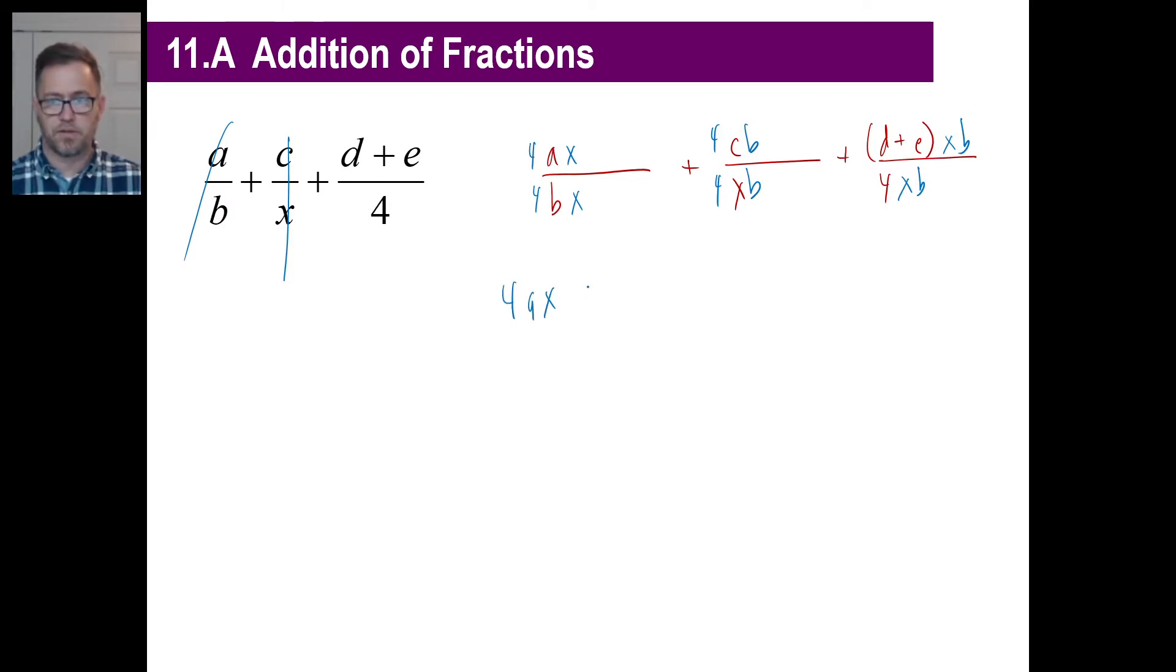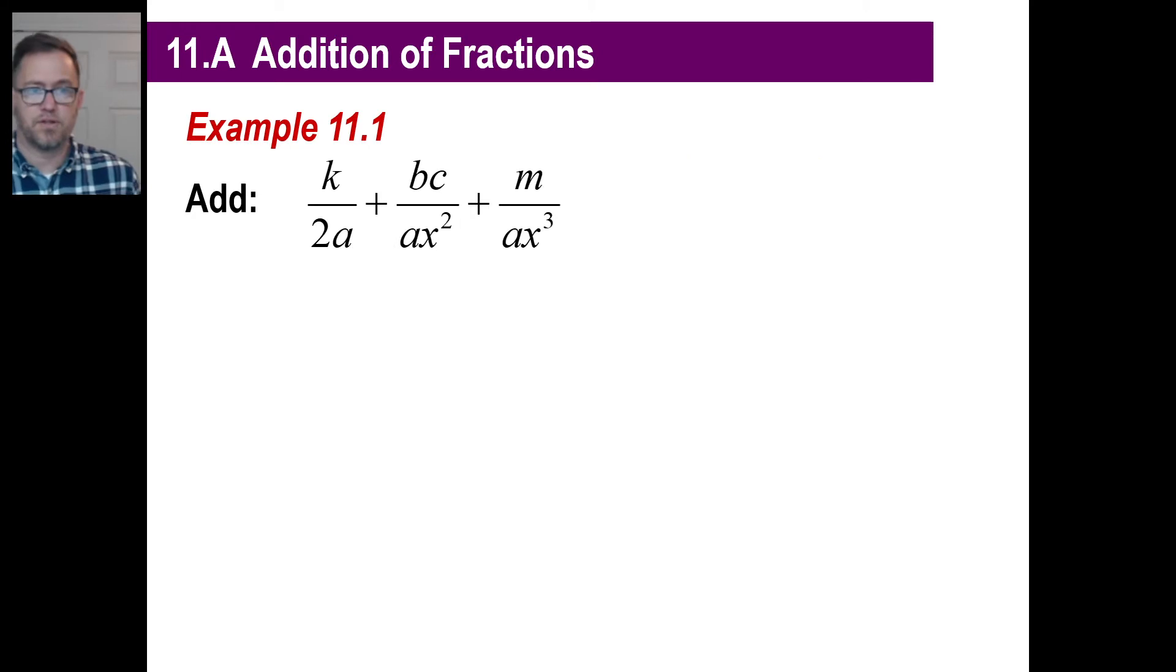So we got 4AX. We got 4BC. And then we'll go plus XB times D, and then plus XB times E, and the whole thing is over 4XB, and everybody's happy with that. Okay, that's it. All right, let's do one more, or a couple more, actually. Pause and copy if you need to.